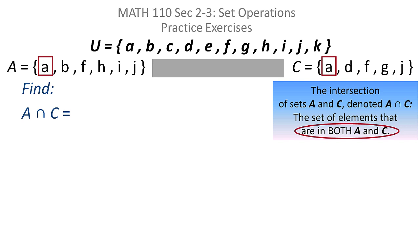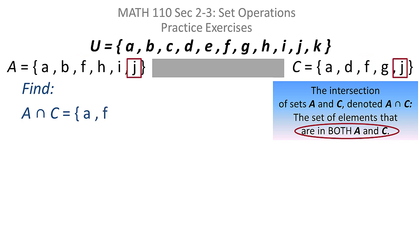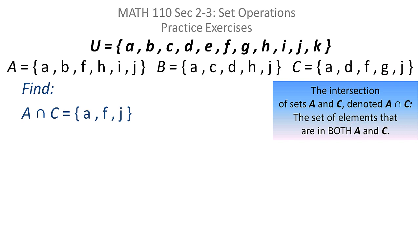Looking for elements in both sets, I see that there's an A in both, so A goes into the intersection. There's an F in both, that goes into the intersection. There's a J in both, so that goes into the intersection. So the intersection of sets A and C is the set consisting of the elements A, F, and J.